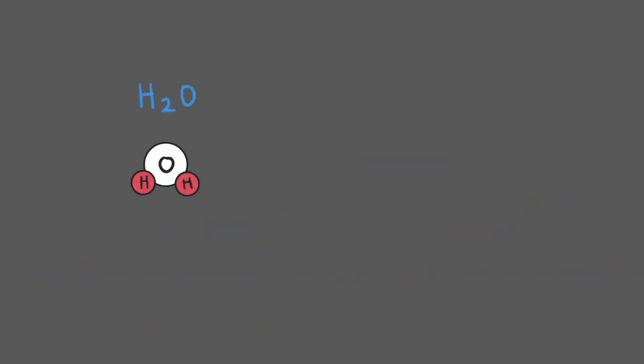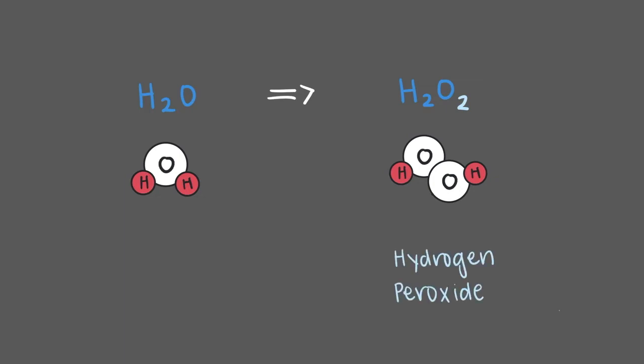If a subscript is changed, the identity of the molecule changes as well. For example, if we change the subscript for oxygen to 2 in the chemical formula for water, we get H2O2. This is the chemical formula for hydrogen peroxide, which is a different species than water, so that's not good.